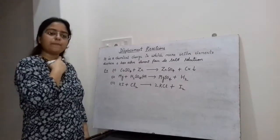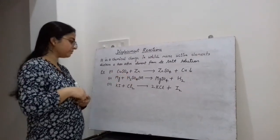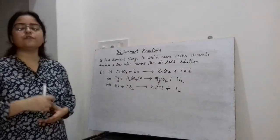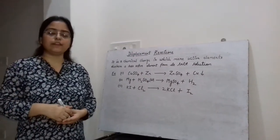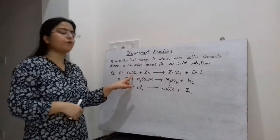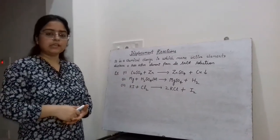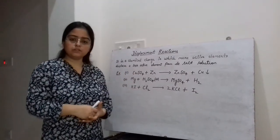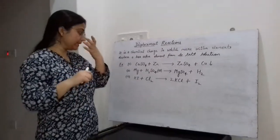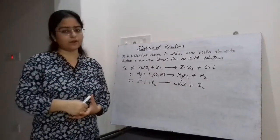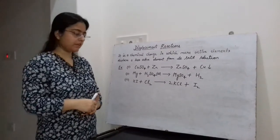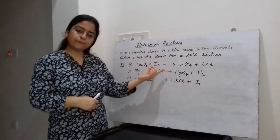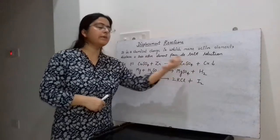Now let's take some examples of how this reaction takes place. In the first example, the reaction is between copper sulphate and zinc. Suppose we have taken a solution of copper sulphate in a beaker — the solution of copper sulphate is blue in colour. Then we will add some pieces of zinc into this copper sulphate solution and stir it with a glass rod. On stirring, we will observe that the blue colour of the solution will fade away and the solution will slowly become colourless.